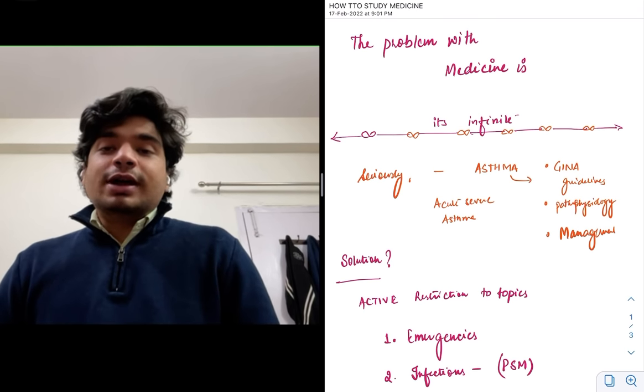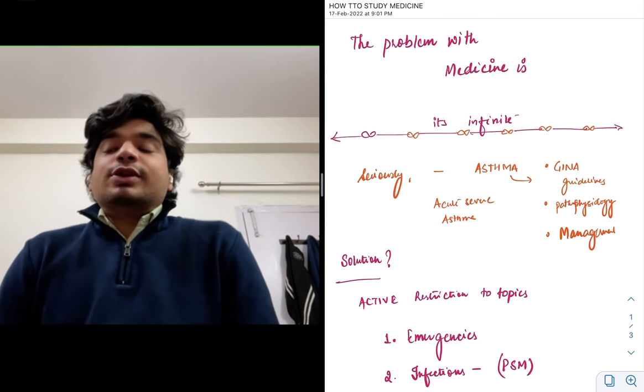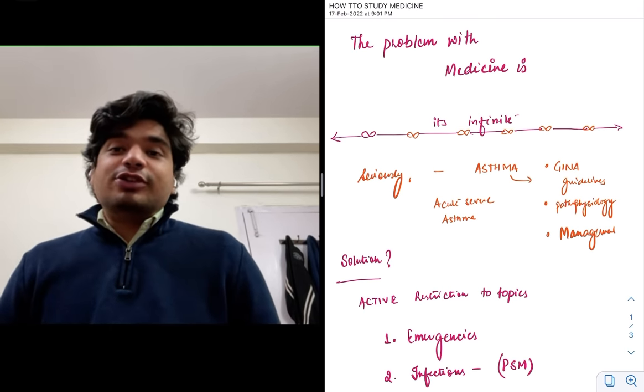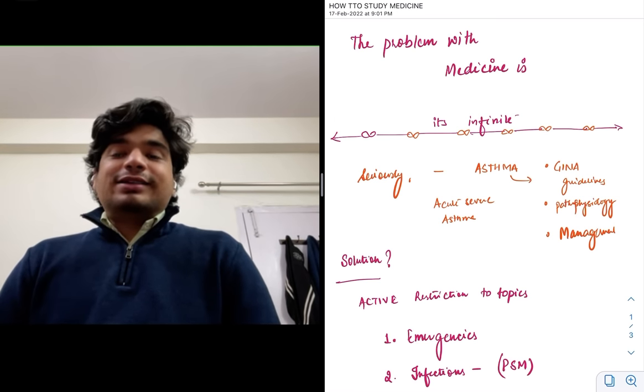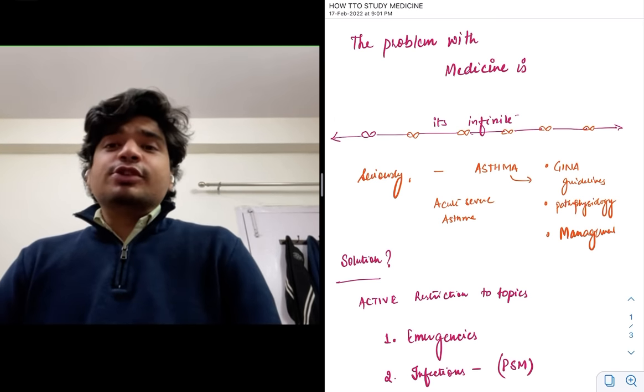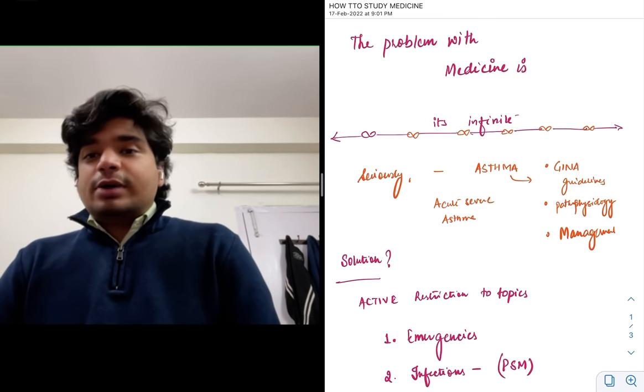But when you want to read about asthma, you can read the GINA guidelines, the pathophysiology, the management, the new monoclonal antibodies that have been involved in management of asthma—omalizumab, reslizumab, and things like that.